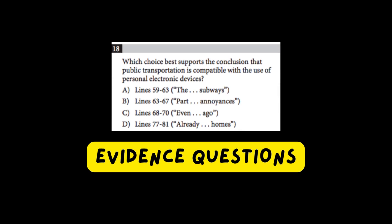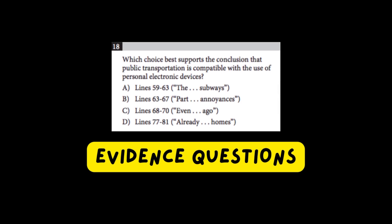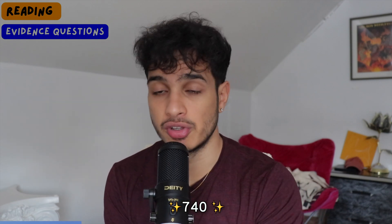Starting off with the first one, you want to pay attention to the SAT reading questions that talk about evidence for the previous question — the ones that go, 'which lines best support your answer to the previous question?' I got a 740 in reading, and what really helped me was going directly to that second part question and skipping the first part.